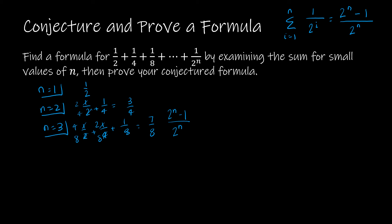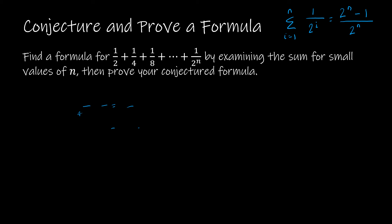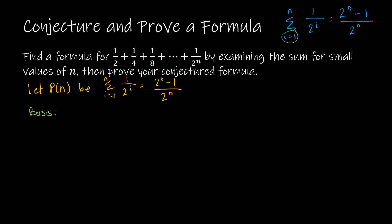We begin our proof. Let P of n be the statement that the summation as i goes from 1 to n of 1 over 2 to the i is equal to 2 to the n minus 1 over 2 to the n. Our basis step is for n equals 1: P of 1 says 1 over 2 to the 1st equals 2 to the 1st minus 1 over 2 to the 1st. On the left I have 1 half; on the right, 2 minus 1 is 1 over 2, which is also 1 half. So the basis statement is true.